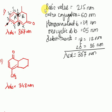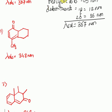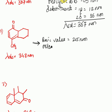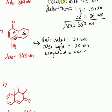The next example is again a 6-membered enone system. The basic value is 215 nanometers again. Then extra conjugation: one extra double bond is present, so extra conjugation contributes 30 nanometers. This double bond is exocyclic to ring B, so the exocyclic double bond contributes 5 nanometers.